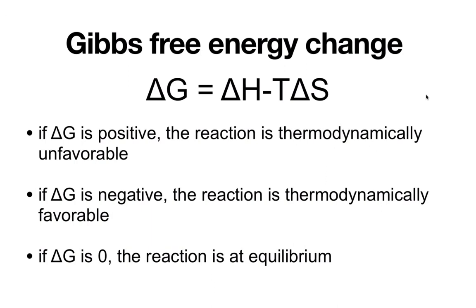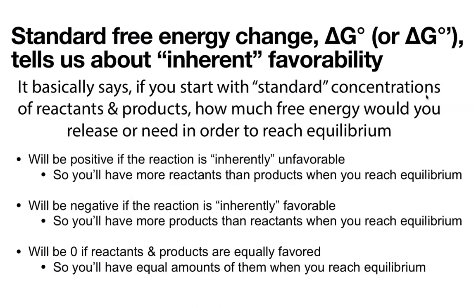I talked about how we want to keep things away from equilibrium, but some things we do want closer to equilibrium so we can more easily go back and forth. But then there are times, with things like ATP, where we really want to make them far from equilibrium so we can better use them as a source of energy. Basically when you're at equilibrium, you have a delta G of zero. What we typically see is this thing called delta G naught — sometimes delta G naught prime — which is basically a way to tell us about inherent favorability.